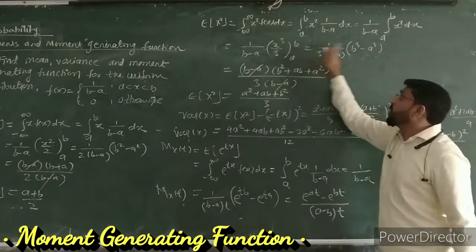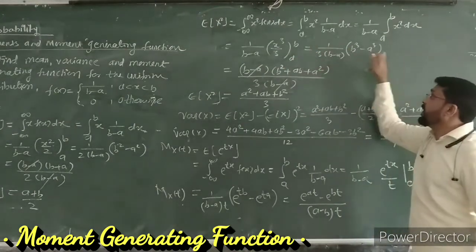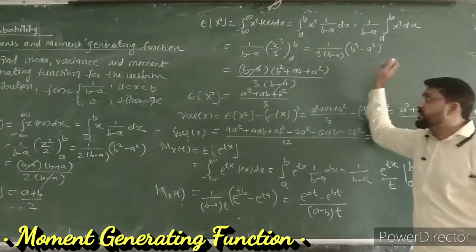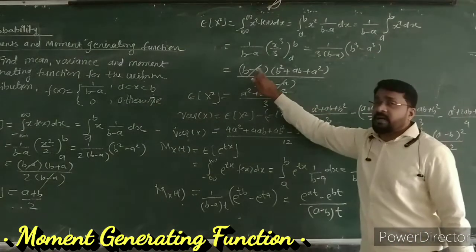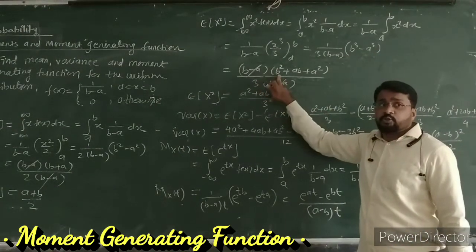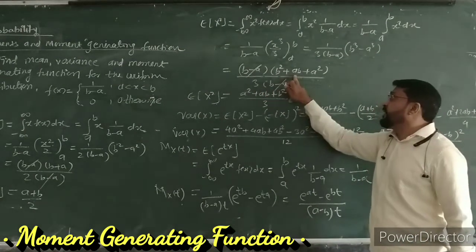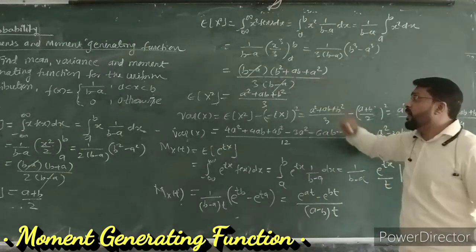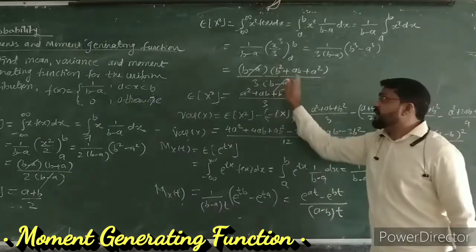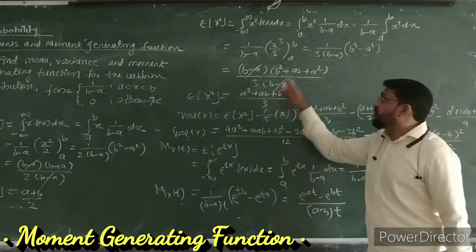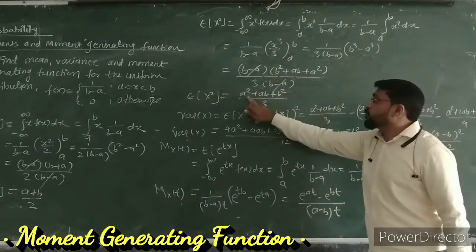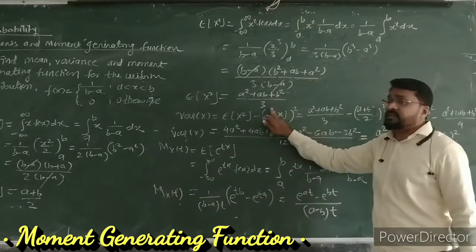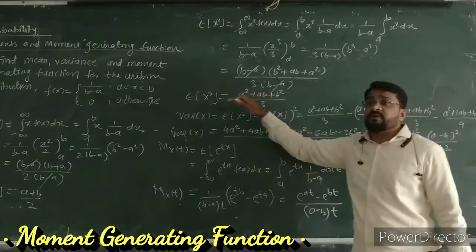The upper limit gives b³ and the lower limit gives a³, so we have (b³ - a³)/(b - a). Factoring b³ - a³ as (b - a)(b² + ba + a²), the (b - a) terms cancel, leaving (a² + ab + b²)/3, which is E(x²).